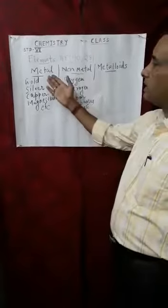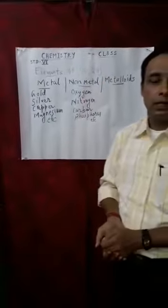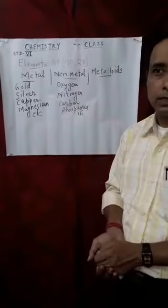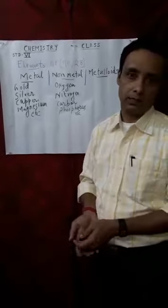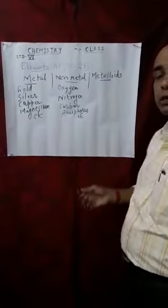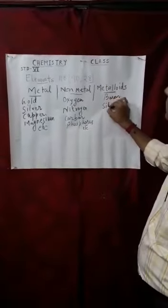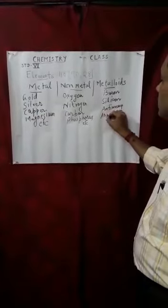Now we shift towards metalloids. Metalloids are those substances which show both the properties of metals and non-metals. Let us see some examples of metalloids: Boron, Silicon, Antimony, Arsenic, and so on.